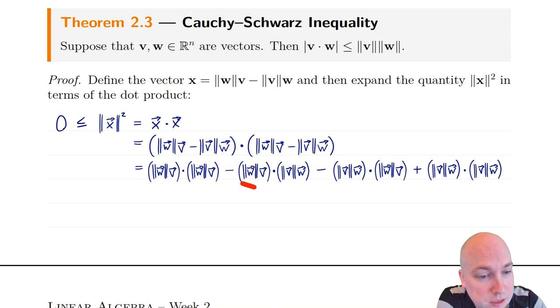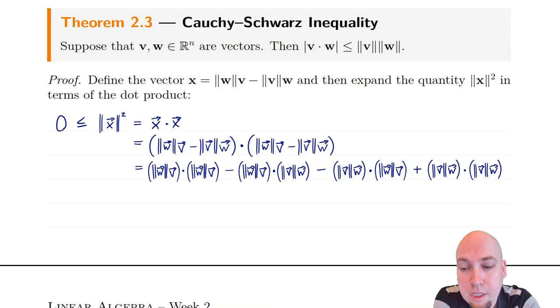Here's first with first, first with last, last with first, and last with last. Be careful that you've got a minus sign on these two cross terms, coming from the minus signs inside the original expression for x.